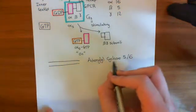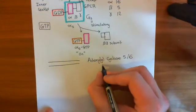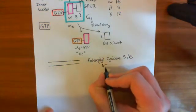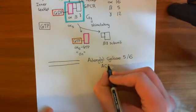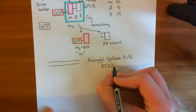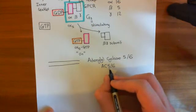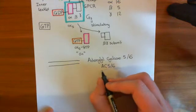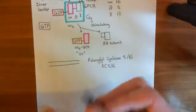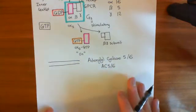Henceforth, we will refer to adenylyl cyclase as AC for short, and then we'll put 5/6. This does not denote that it's a chimera of the two. It denotes that I'm either talking about an adenylyl cyclase 5 enzyme or the exact same thing holds true of adenylyl cyclase 6 enzymes.